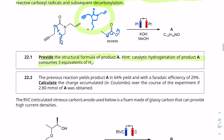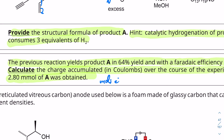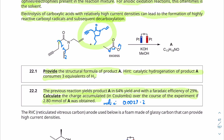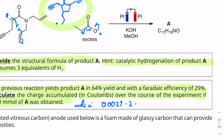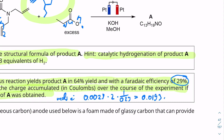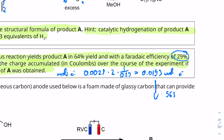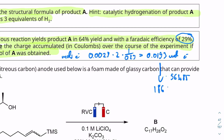Moving on to question 22.2: the previous reaction yields product A in 64% yield with a Faradaic efficiency of 29%. Calculate the charge accumulated in coulombs if 2.8 millimoles of A was obtained. The moles of electrons is 0.0028 moles times 2, because one reaction consumes two moles of electrons — one here and one for the propanoic acid step. We divide by 0.29 for the efficiency, giving 0.0193 moles of electrons. Multiplying by 96,485 coulombs per mole gives 1,863 coulombs.